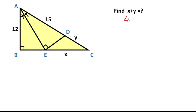Now we will calculate the sum of x and y using a fourth method. First of all, let's call these three equal angles alpha and here theta. That means here is also theta and this angle is also alpha.